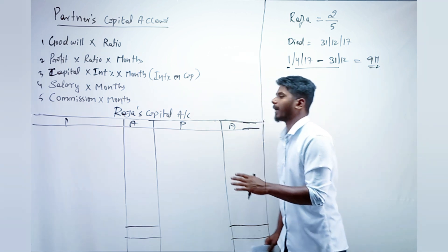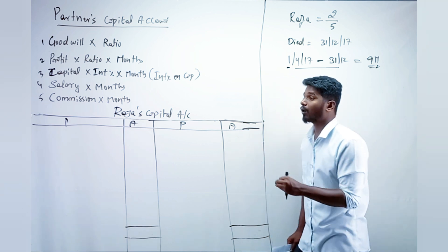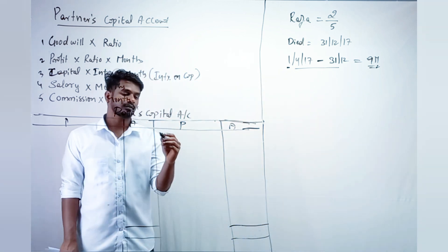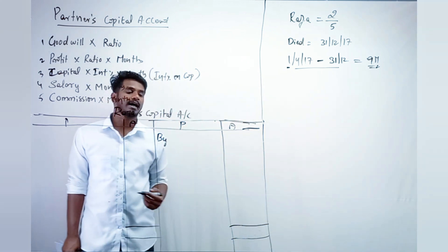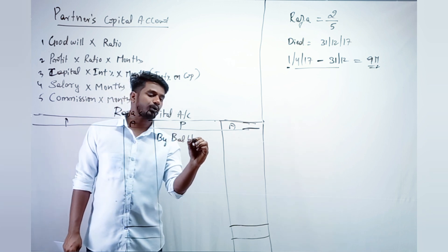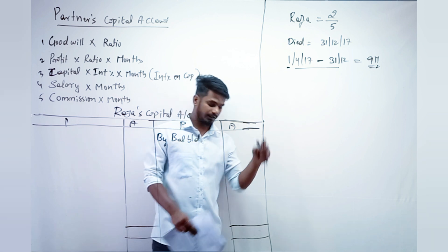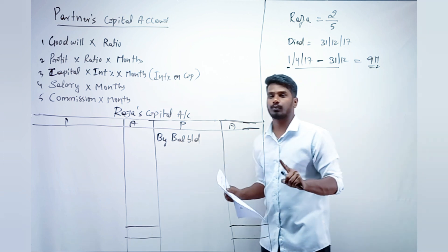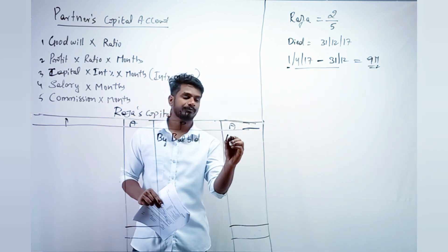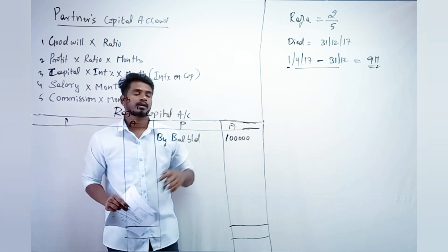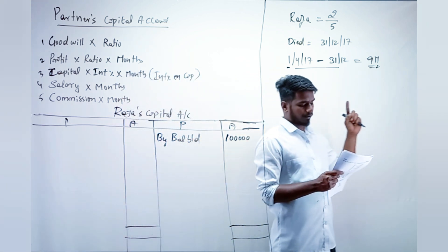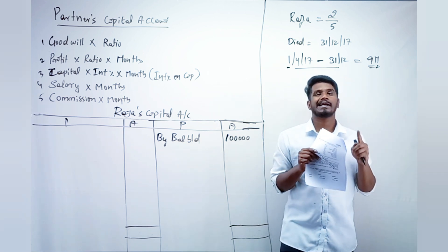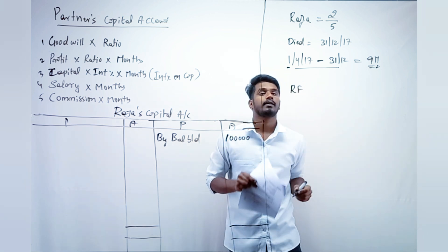Let us start the question. The first thing in the partner's capital account is to record the capital. We credit it by balance brought down. In the balance sheet on the liability side, Raja's capital is 1 lakh rupees, so we write 1 lakh rupees on the credit side.